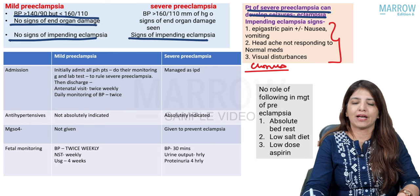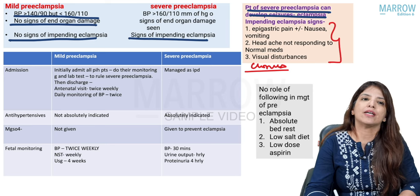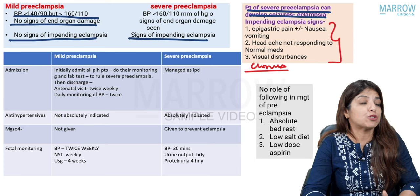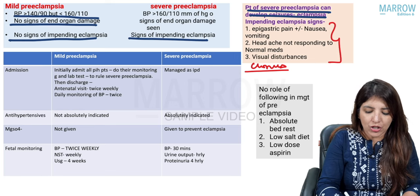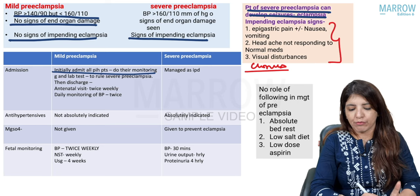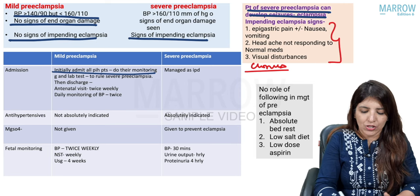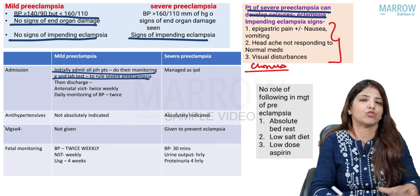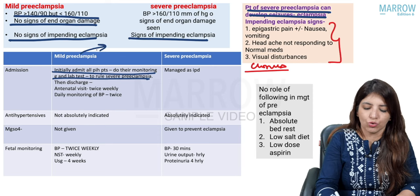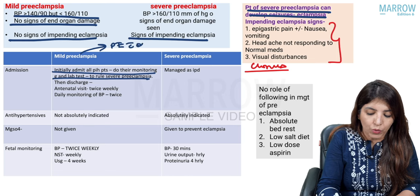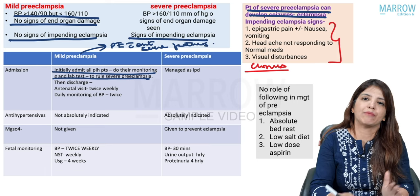Eclampsia and HELLP syndrome are both complications of severe preeclampsia. Whenever a patient comes with PIH, I will admit them all initially to do lab investigations and confirm whether it is mild or severe preeclampsia. These days the term mild preeclampsia is not used — the term is preeclampsia without severe features. For severe preeclampsia, the term is preeclampsia with severe features.